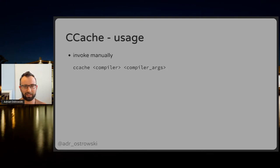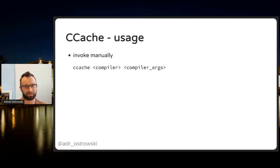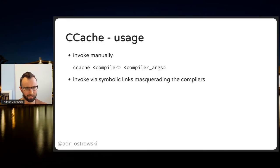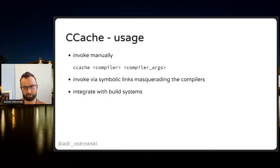How do you actually use Ccache? You can invoke it manually on the command line: pass ccache, then the compiler like GCC, then the args — optimization options, includes, source files, etc. Another way is to use it through symbolic links masquerading as the compilers. Yet another way, which I prefer, is to integrate it with your build system — it's the simplest approach.